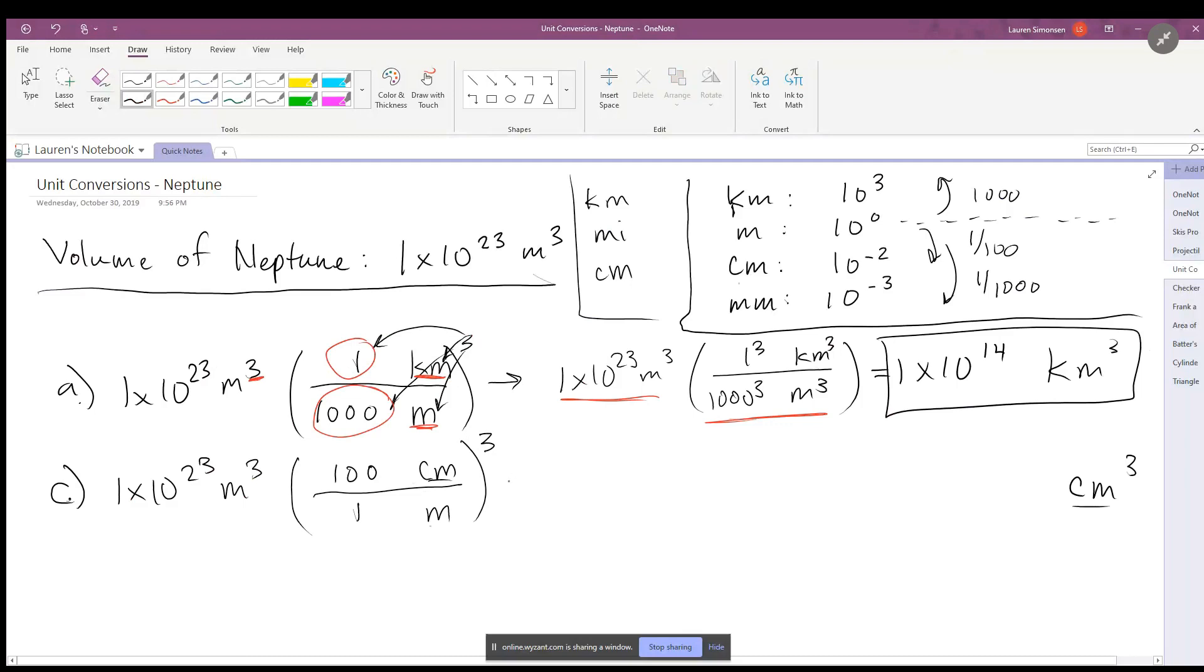And once again, we want everything to be cubed, so that cube has to go to every single point. Writing this out again: 100 has to be cubed, centimeters has to be cubed, 1 has to be cubed, meters has to be cubed. Once again, when you calculate that out, that becomes 1 times 10 to the 29th centimeters cubed.